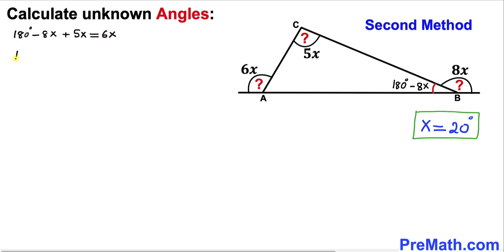Let's go ahead and combine the like terms. So we got 180 degrees minus 3x equal to 6x. Let's add 3x on both sides. This is gone. So our 180 degrees turns out to be 9x. Let's divide both sides by 9. So our angle x turns out to be 20 degrees.